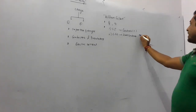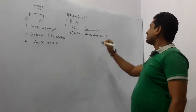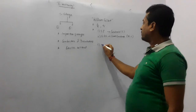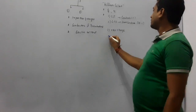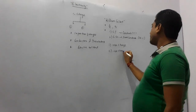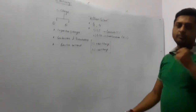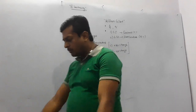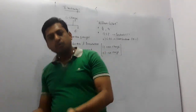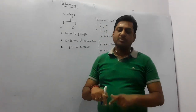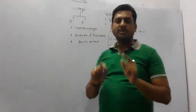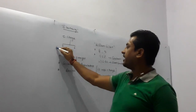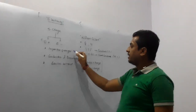Stat coulomb is written in short as st.C. Now, types of charge: charges are of two types — number one, positive charge, and number two, negative charge. Whether a body is positively or negatively charged depends upon whether the body can lose electrons or gain electrons, i.e., whether the body is a metal or a non-metal.